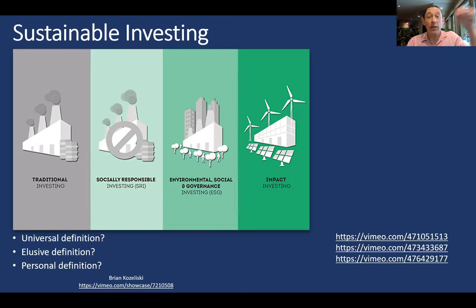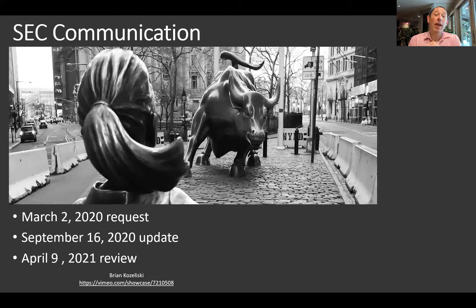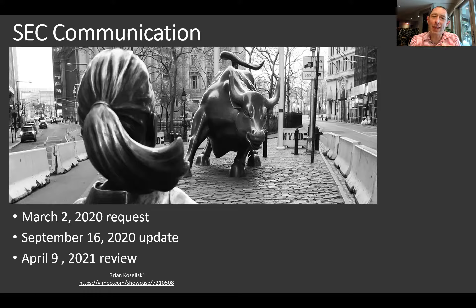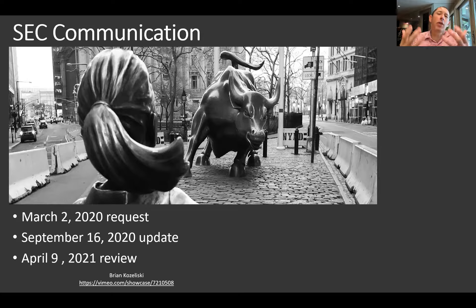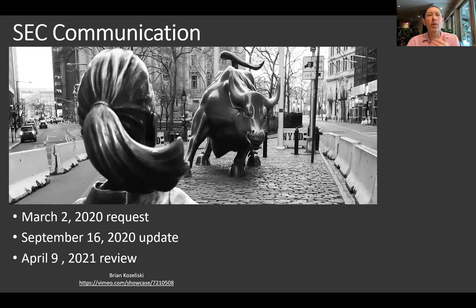Now the SEC is getting involved in this debate. On March 2nd, 2020 they asked for public opinion on how the Names Rule should be enforced or used when it comes to sustainable investing. On September 16th, 2020 they updated that, noting they were thinking about different ways to enforce this — ranging from fairly weak enforcement up to really strong enforcement — without proposing a specific rule yet. Then, very recently in April 2021, they put out a publication saying they are definitely seeing cases where names are being used that don't really reflect what's in the investment strategy.